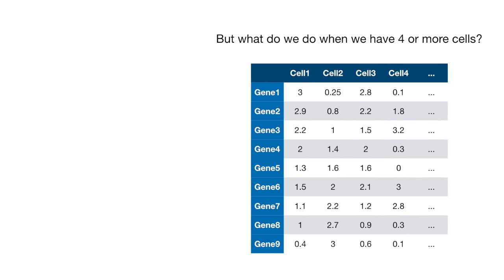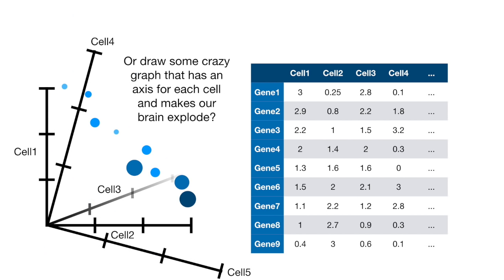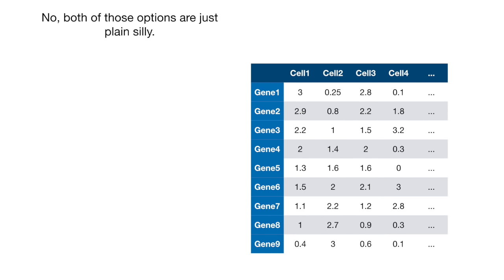But what do we do when we have four or more cells? Draw tons and tons of two-cell plots and try to make sense of them all? Or draw some crazy graph that has an axis for each cell and makes our brain explode? No.